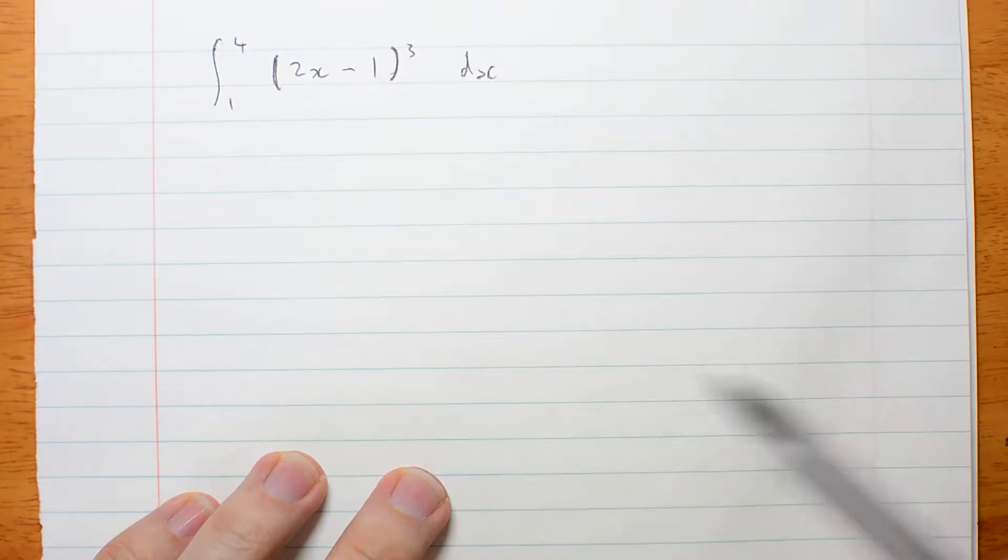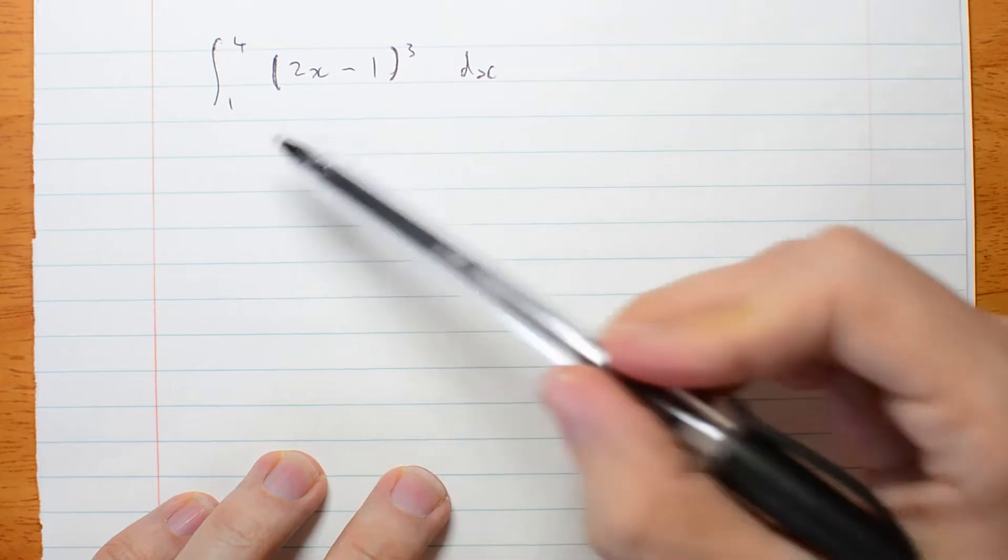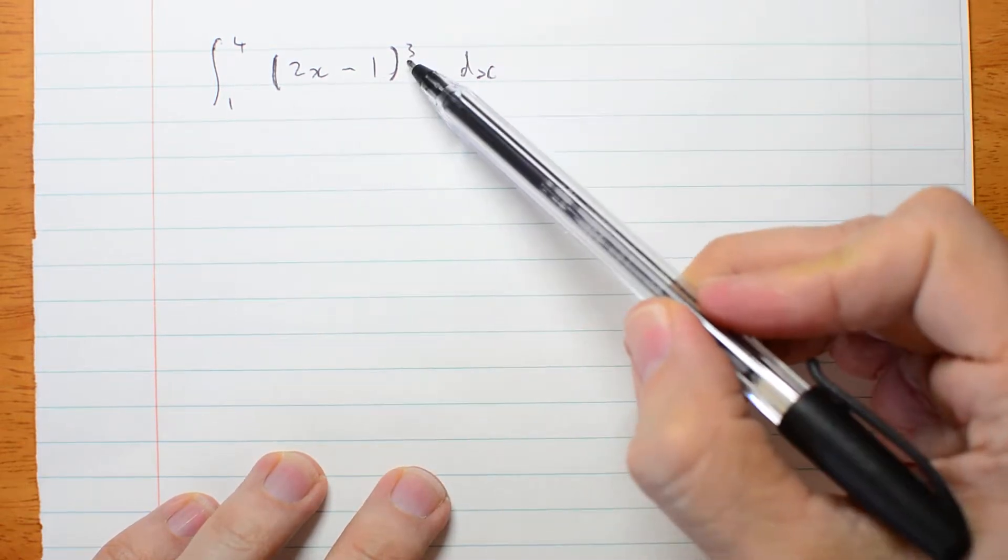Now here's a slightly harder one. The integral from 1 to 4 of 2x minus 1 cubed dx.